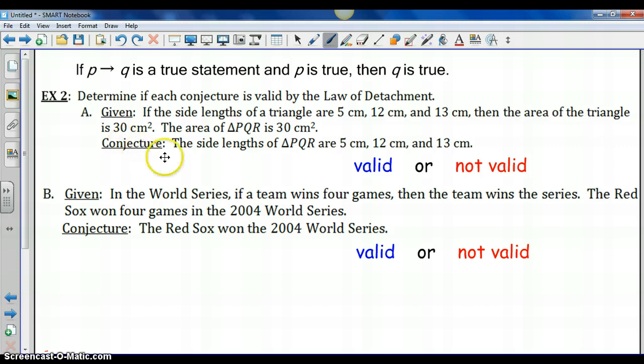For part A, we are given the side lengths of a triangle to be 5 cm, 12 cm, and 13 cm. If that's true, then the area of the triangle is 30 cm squared. That is a conditional statement. We are also given that the area of a specific triangle is 30 cm squared. The conjecture we arrive at is that the lengths of the sides of triangle PQR are 5, 12, and 13 cm. This takes our law of detachment and tries to apply it in reverse. We are saying that because this is true and our conclusion is true, then our hypothesis must have been true. And while that might be a true statement, it is not a valid use of the law of detachment. So we are going to state that this is not valid.